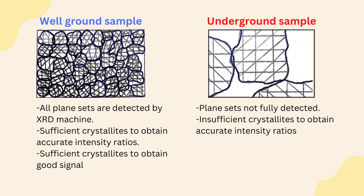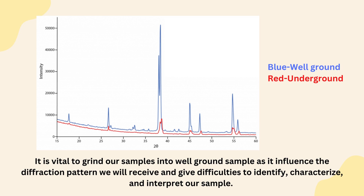For well ground samples, all plane sets are detected by the XRD machine. Thus, it has sufficient crystallites to obtain accurate intensity ratios and to obtain a good signal. For underground samples, the plane sets are not fully detected, and thus it has insufficient crystallites to obtain accurate intensity ratios. In conclusion, it is vital to grind our samples into well ground samples as it influences the diffraction pattern we will receive and gives difficulties to identify, characterize, and interpret our sample.